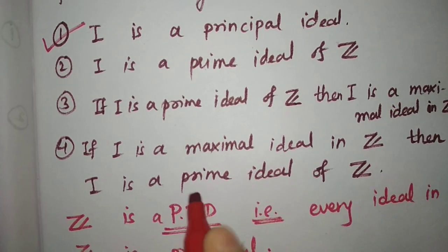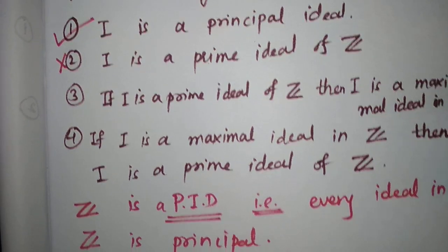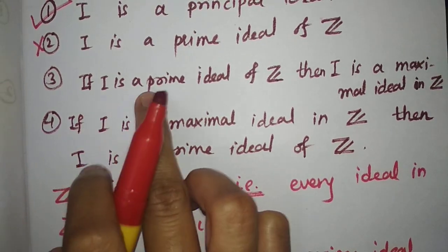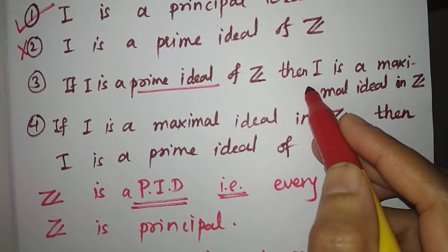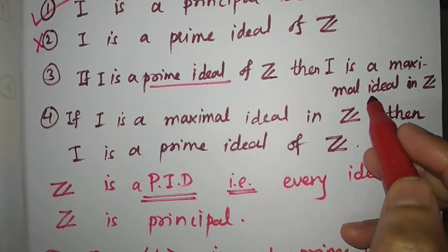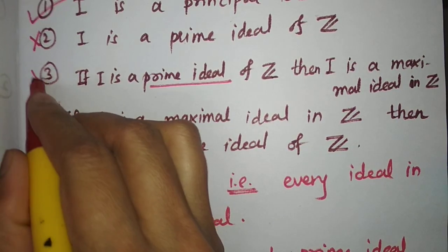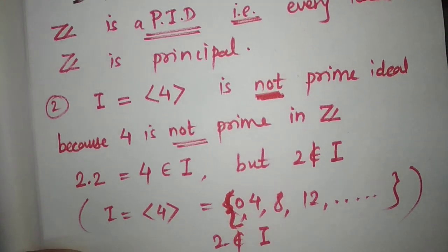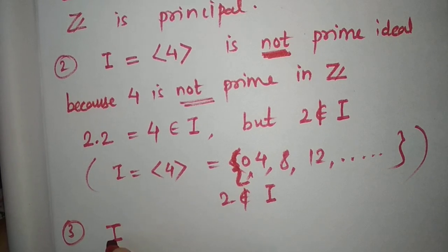This second option is false. Now the third option says that if I is a prime ideal of Z, then I is a maximal ideal in Z, which is not true. Take the ideal (0) - for the third option, you take ideal I equal to the zero ideal, generated by 0.